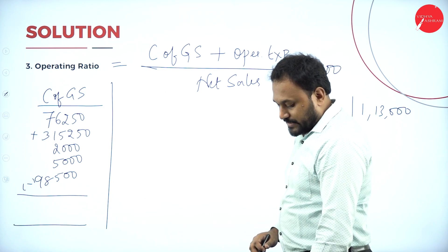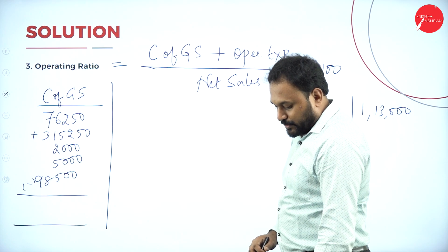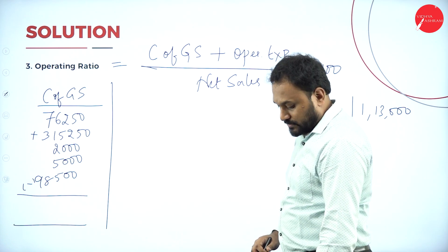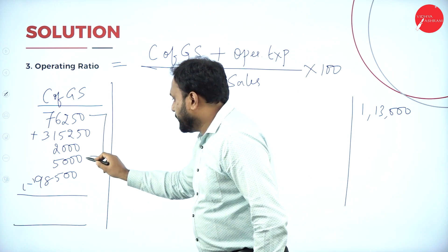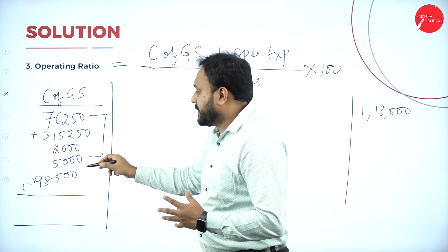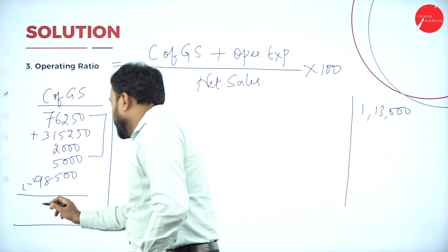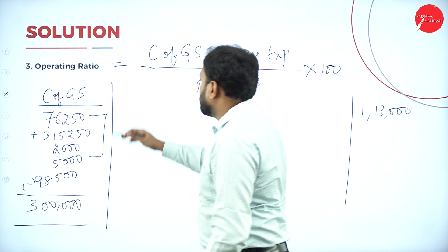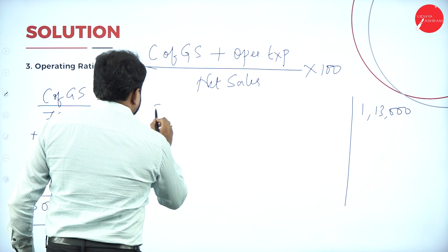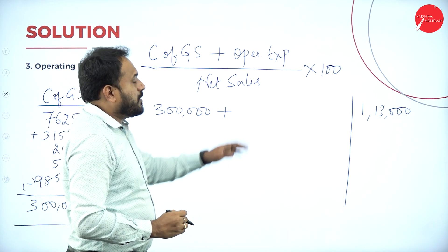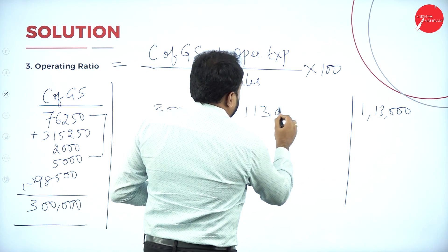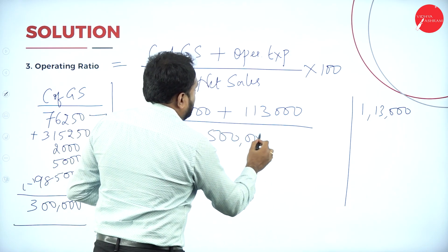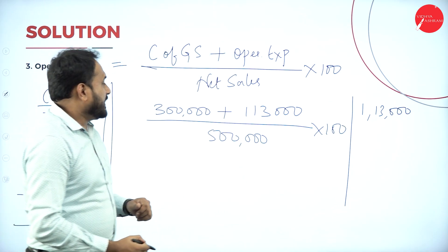Now calculating: 76,250 + 3,15,250 + 2,000 + 5,000 = 3,98,500. Then subtracting Closing Stock: 3,98,500 minus 98,500 = 3,00,000. So Cost of Goods Sold is 3 lakh rupees. Operating Ratio = (3 lakh + 1,13,000) divided by Net Sales of 5 lakh, into 100.